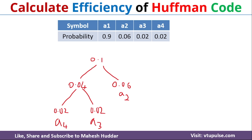Now we need to consider these two things — there are no other alternative options. The only question is should A1 be written on the left side or the right side? If you compare 0.1 and 0.9, since 0.9 is more than 0.1, I will write 0.9 on the right-hand side. Then I will merge these two things and get 1 as the probability here.